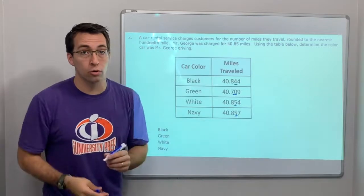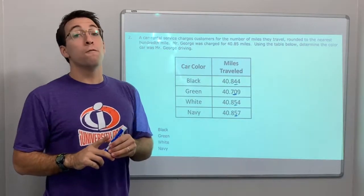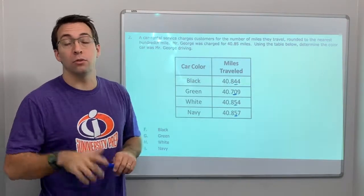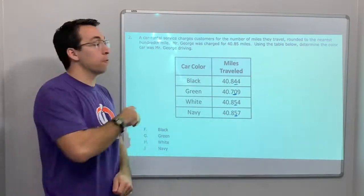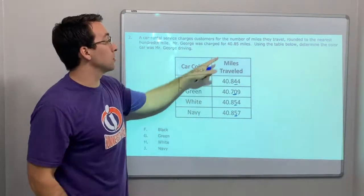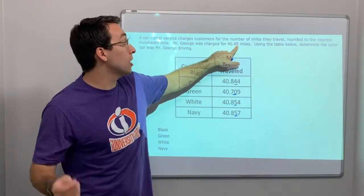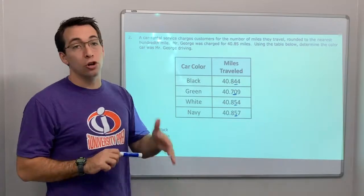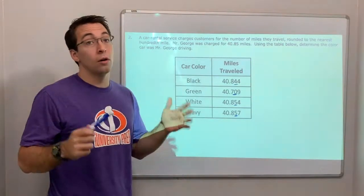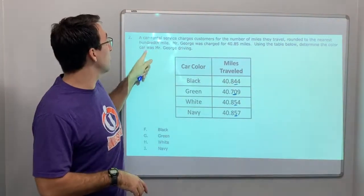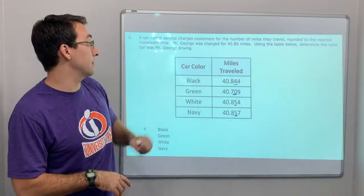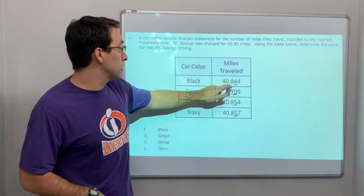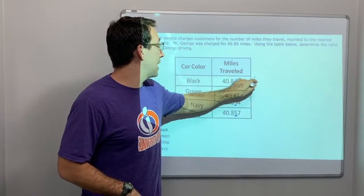Now, Mr. George was charged 40.85 cents. $40.85, or sorry, was charged for 40.85 miles. 40 and 85 hundredths miles. Using the table below, determine the color car was Mr. George driving. Which color car was he driving? So, let's go four rounds down.